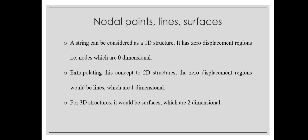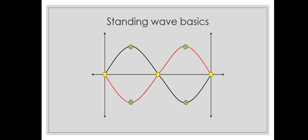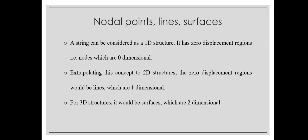Now we'll talk about nodal points, lines, and surfaces. A string can be thought of as a one-dimensional structure with certain zero-displacement regions — the nodes where displacement is zero. Nodes can be thought of as points, which are zero-dimensional. For every n-dimensional structure, the zero-displacement regions are always n minus one dimension. So for a 1D string, the nodes are zero-dimensional. If we extrapolate to 2D structures, they will also have zero-displacement regions, but they will be one-dimensional — meaning lines. And for 3D structures, the zero-displacement regions will be surfaces. These points will be more clear when you actually look at a mode shape.